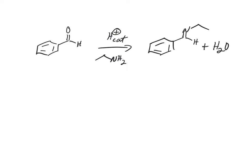Now, how do we do that in a mechanism? The first step is going to be protonation, right? We're going to set an acid condition, so the first step is always protonation. Use equilibrium arrows. So we've done a protonation — that's made the carbon of the aldehyde more reactive.